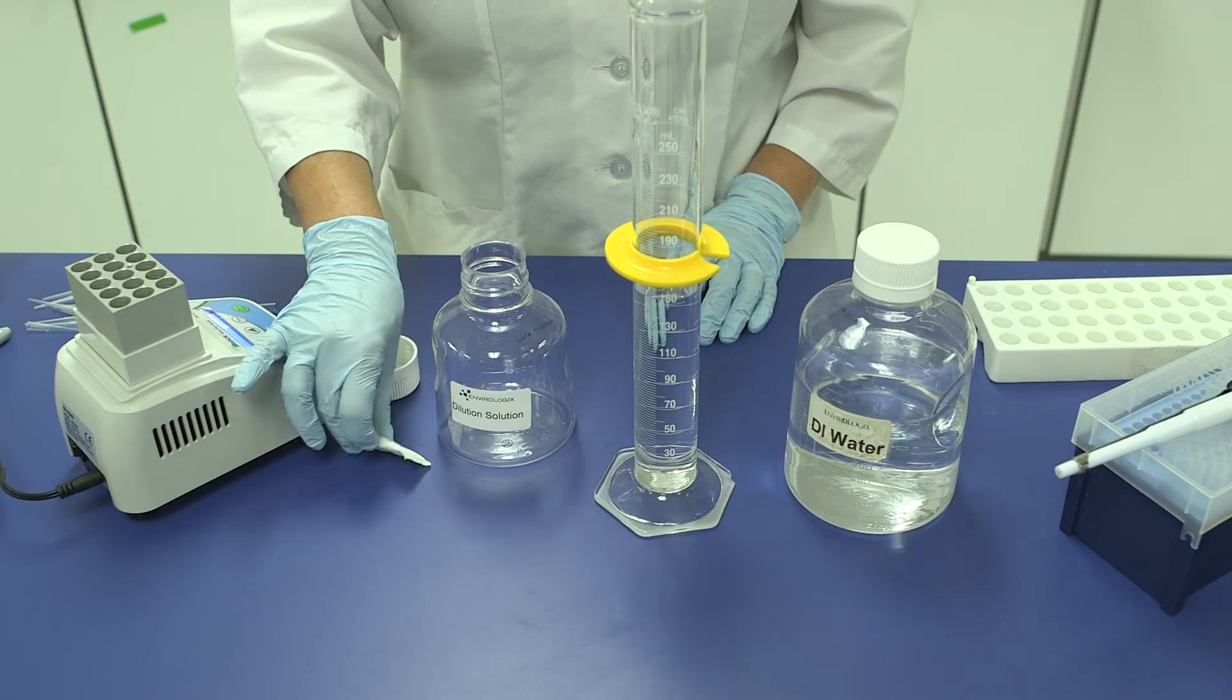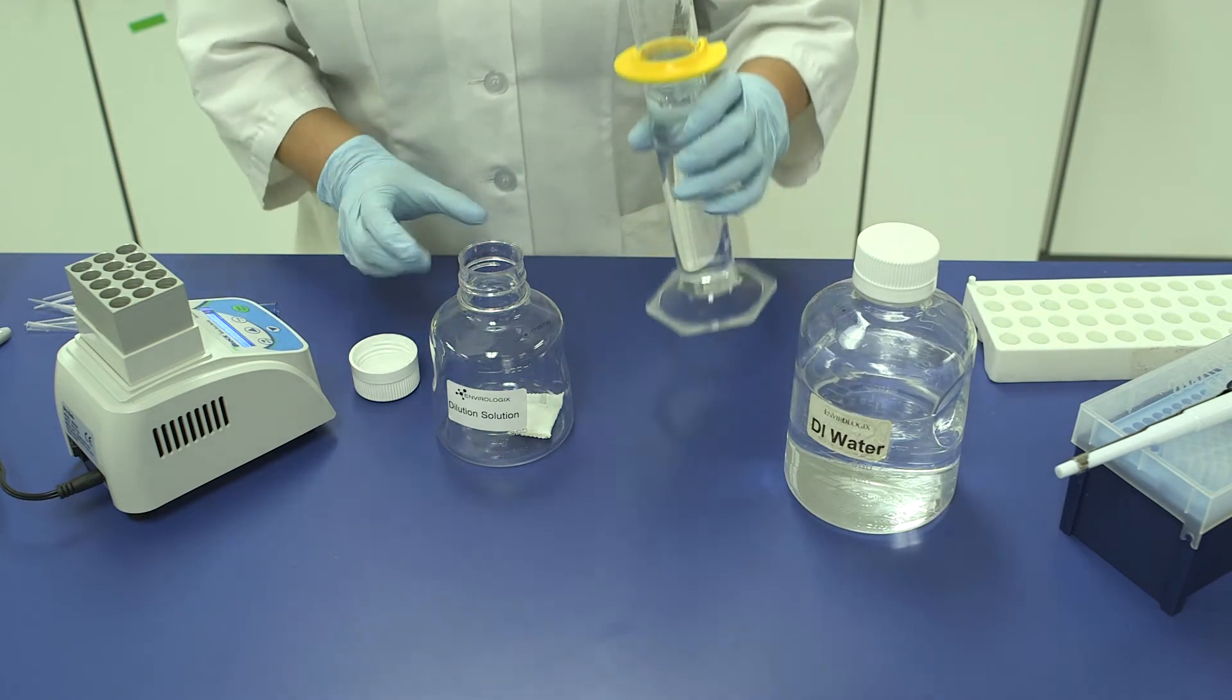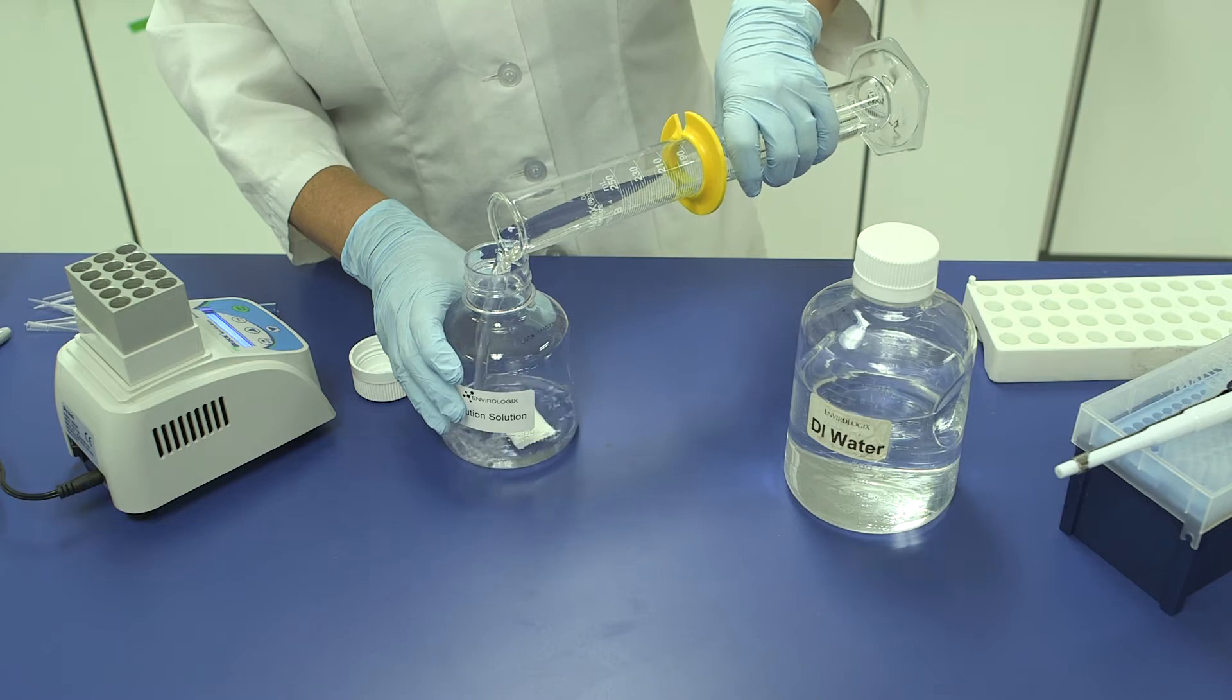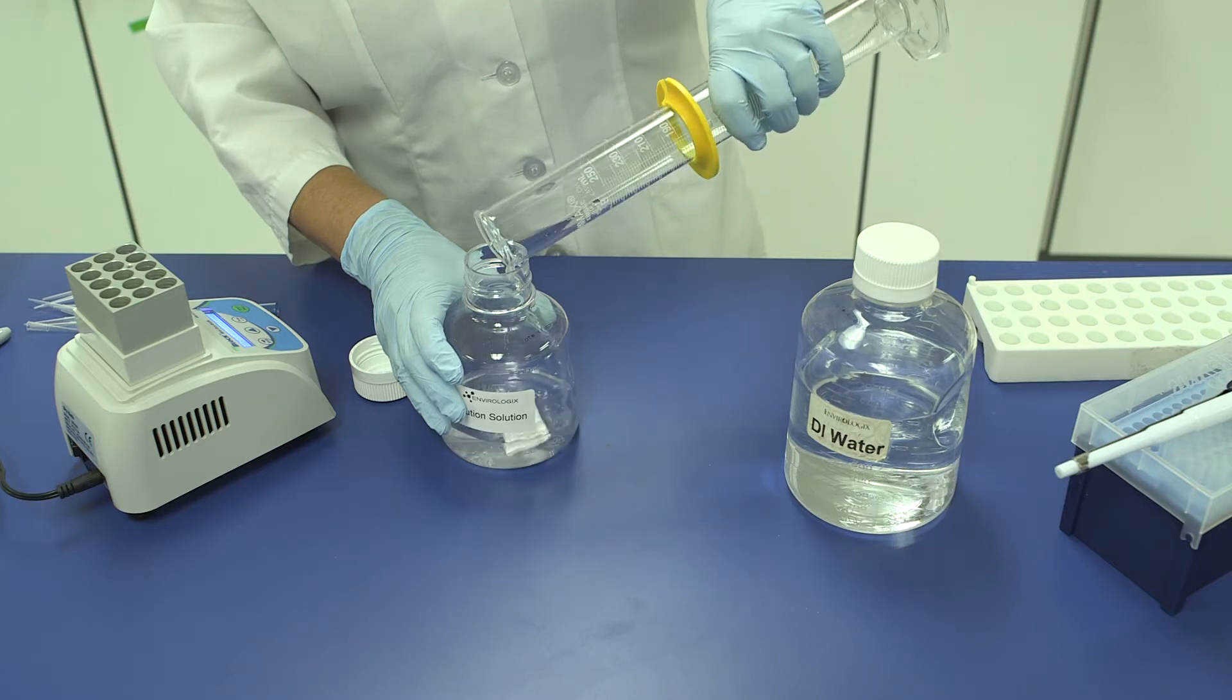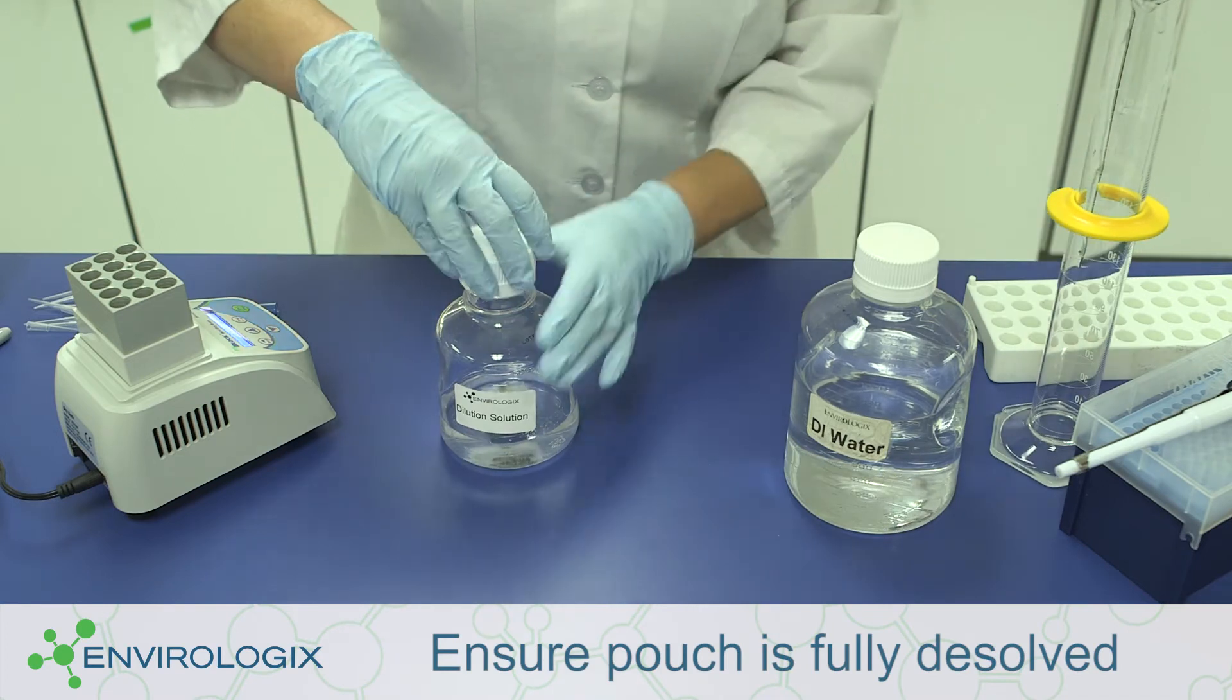Prepare the dilution solution as needed by dissolving one EB-17 pouch in 150 milliliters of distilled or deionized water. This can be stored according to the product insert instructions. Mix thoroughly before each use.